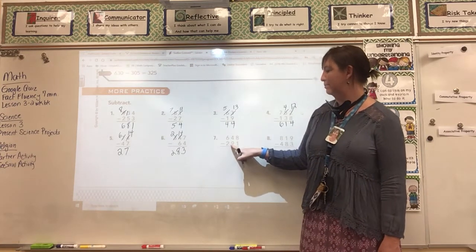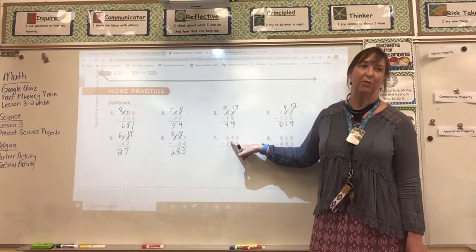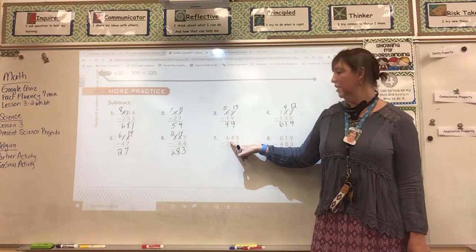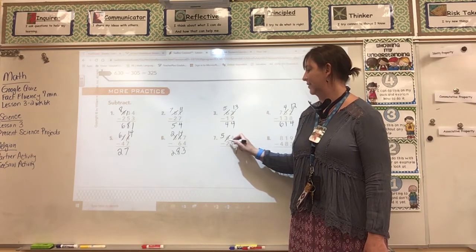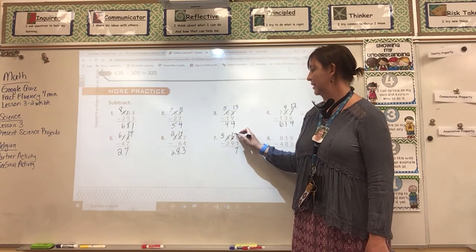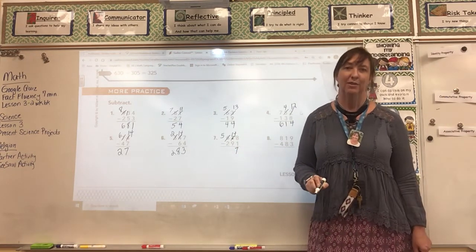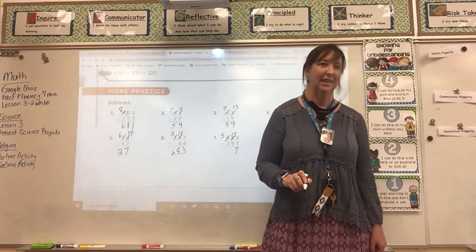I can't subtract 9 from 4 because 4 is too small. So I have to borrow from the 6 and make it a 5. The 4 becomes a 14. What's 14 minus 9? 5.